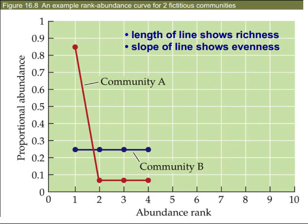When measuring biodiversity in communities, we often create rank abundance curves. On the horizontal x-axis, we see each species numbered and ranked by their total abundance — the total number of individuals for each species. On the vertical y-axis, we see the proportion of each species' abundance. This allows us to estimate richness as the length of the line and evenness as the slope of the line. In this example, both communities have a richness of four, but community B is more even than community A — it has a smaller slope.